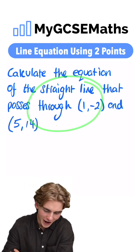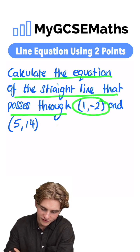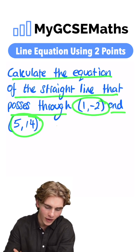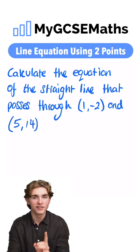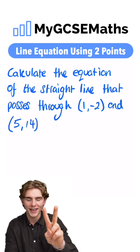Let's have a look. It says calculate the equation of the straight line that passes through the points (1, -2) and (5, 14). Now how are we going to do this? In order to find the equation of the straight line, we're going to need two things: we're going to need the gradient and we're going to need the y-intercept.